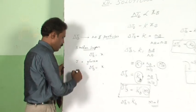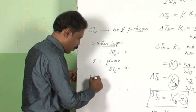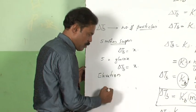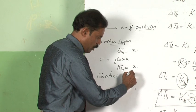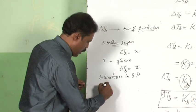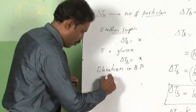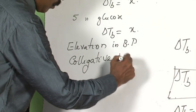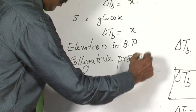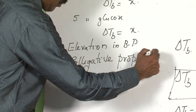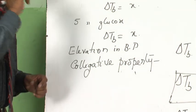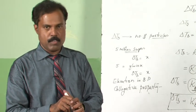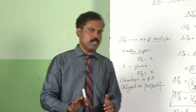This particular property — elevation in boiling point — depends on the number of particles. Therefore, elevation in boiling point is referred to as a colligative property. A colligative property is a property which depends only on the number of particles, not on the nature of the particles.